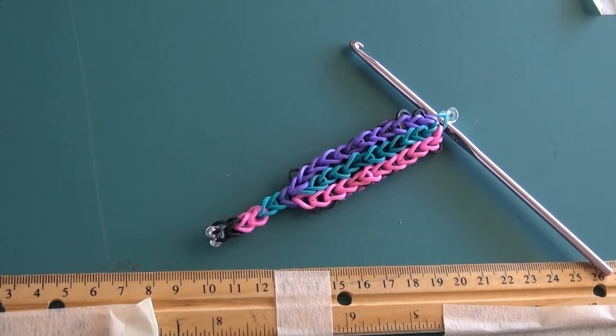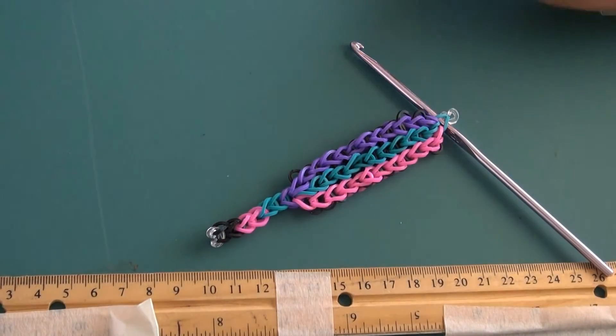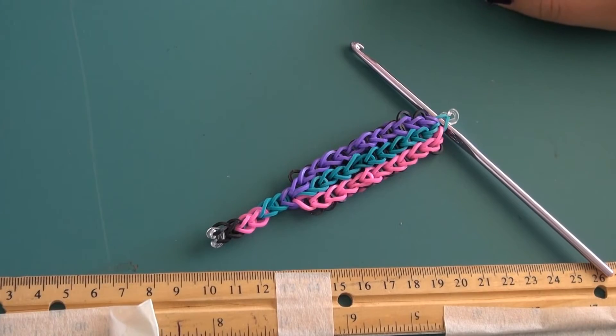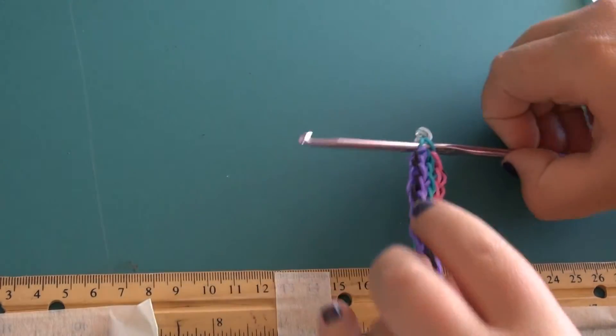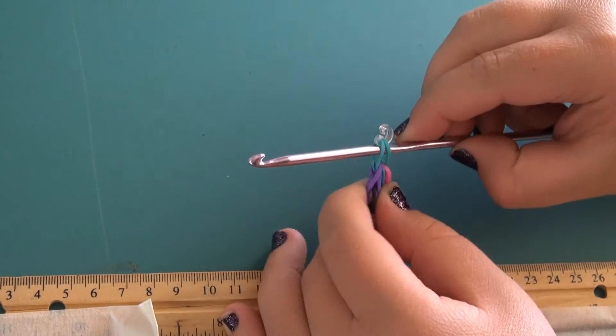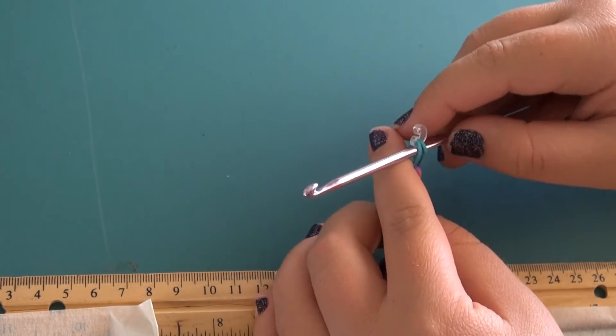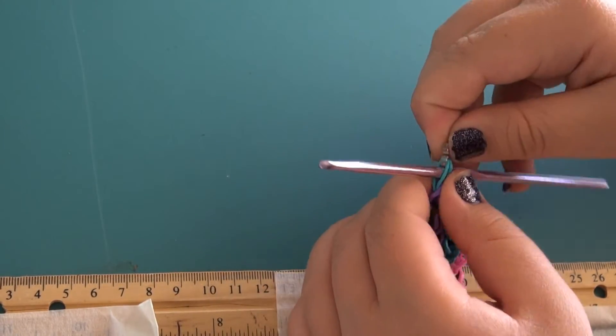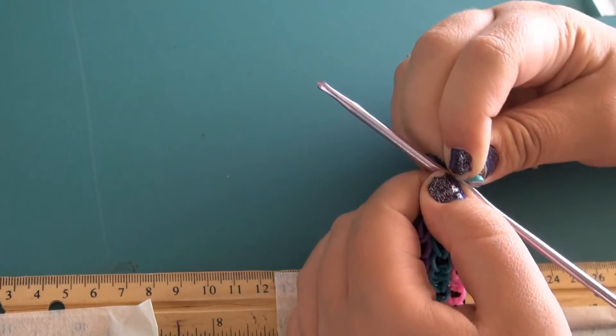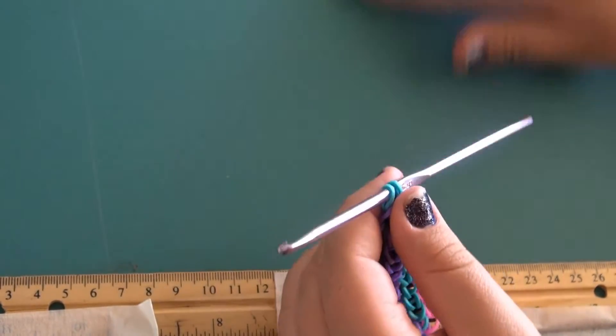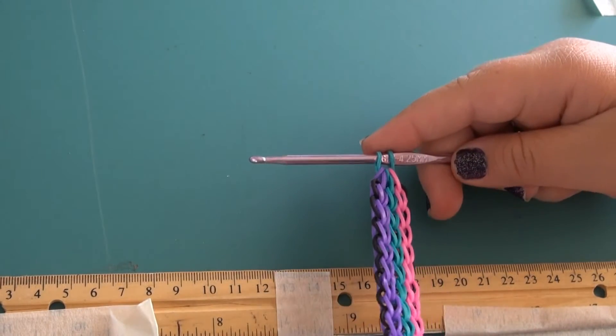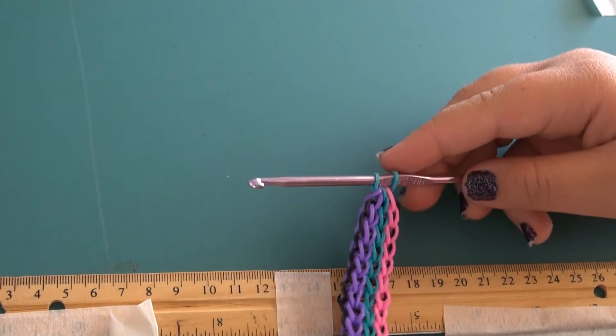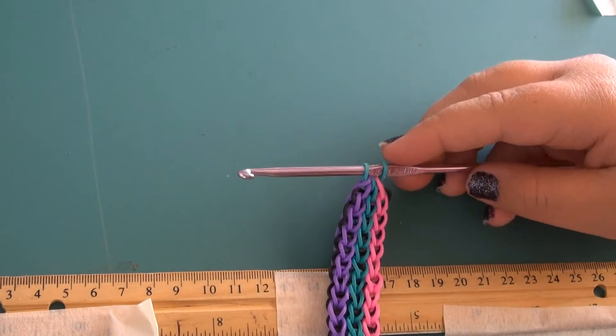I have made an extension on one side of seven bands, and then I secured it with a C-clip. And on the other side, you will put your hook through the band, the one band you have secured. And you can go ahead and take that clip off. And then you add some more bands on this side. I will do about seven again, and then we will connect them in the middle.